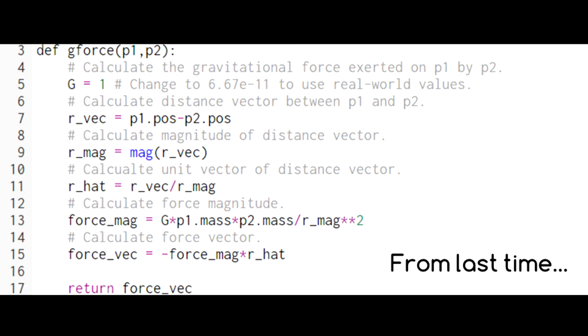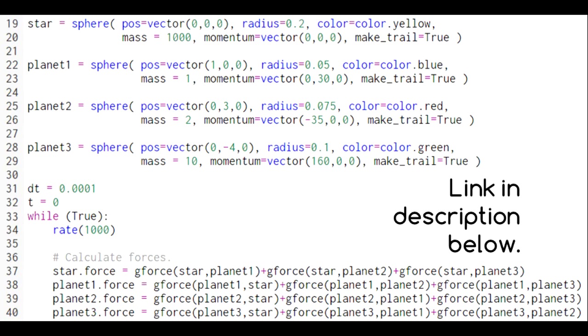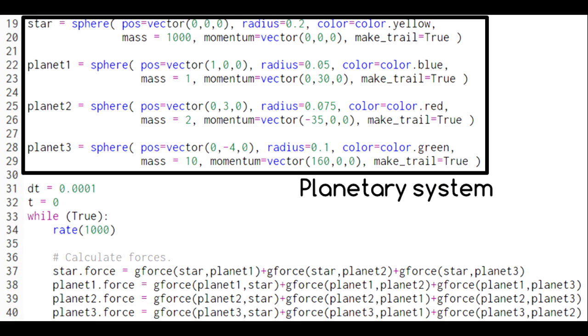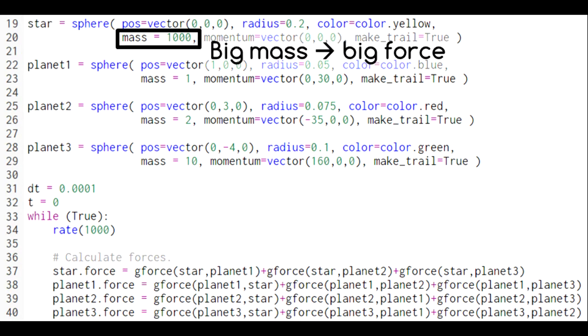But this is exactly why we created our force function. In this code, which is available in a link in the description below, we've set up one star and three planets. Notice that the star has a much higher mass than the planets, so its force on them will be the strongest.